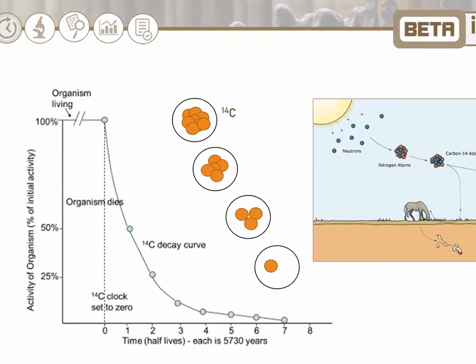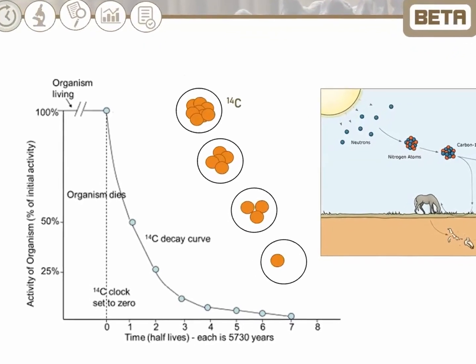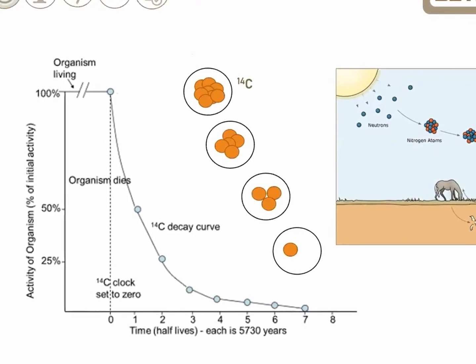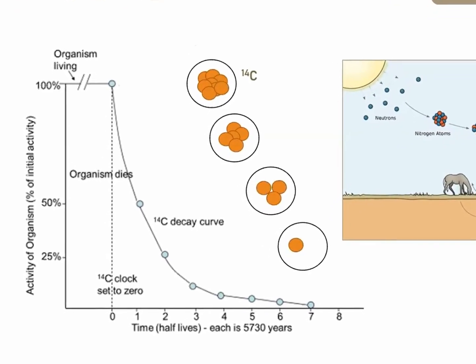This left plot shows the decay of 14C over time after death. The x-axis shows time in number of half-lives, and the y-axis shows the percentage of carbon-14 remaining. You can see the quantity of 14C decreases over time.